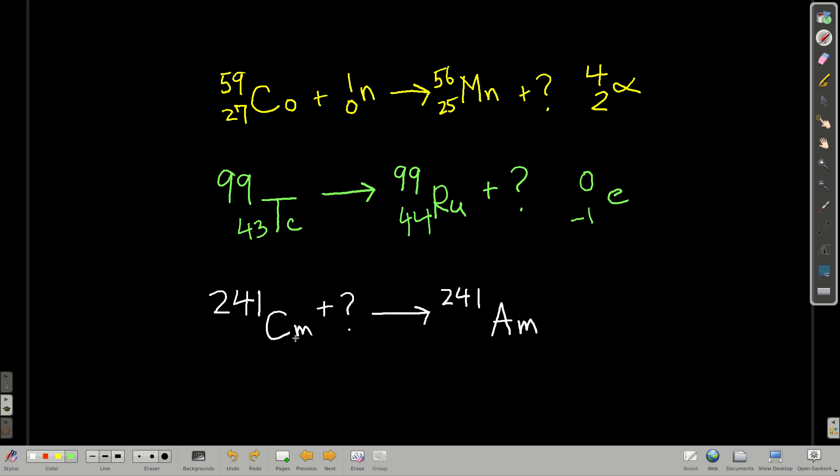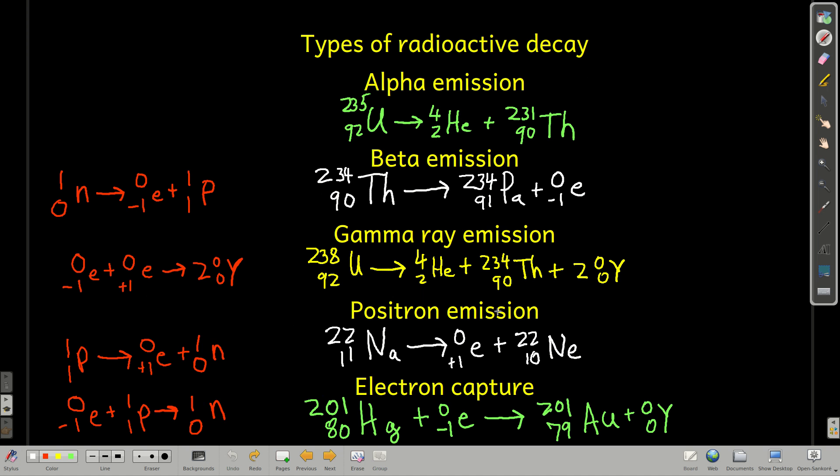Now, curium-241 reacting with something to make americium-241. Let's put the atomic numbers in. So we're just looking on the periodic table. Curium is atomic number 96, and americium is atomic number 95. So we say 241, 241, they're the same. That means that this particle has to have a 0 on top. 96 here, 95 here. We have to take one away from 96, so it's negative 1, which makes it an electron. So this process is called electron capture. That's how you figure these things out.